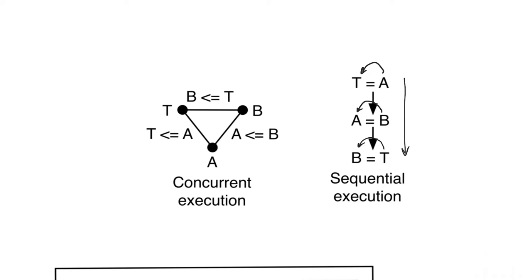However, if these three statements describe connections of hardware, then we have three nodes A, B, and T. And the three statements are simply saying that T is connected to A, A is connected to B, and B is connected to T. And so it's just simply describing a short circuit between the three nodes T, A, and B.